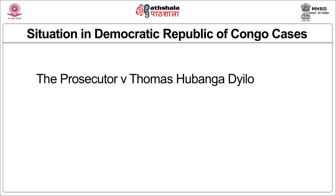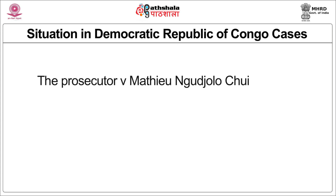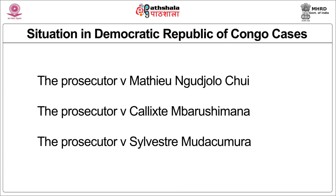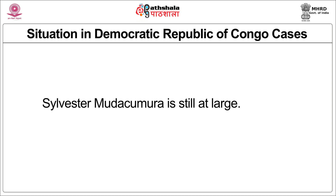In the situation in the Democratic Republic of Congo, the cases are the Prosecutor versus Thomas Lubanga Dyilo, the Prosecutor versus Bosco Ntaganda, the Prosecutor versus Germain Katanga, and the Prosecutor versus Mathieu Ngudjolo Chui. There are also cases of the Prosecutor versus Callixte Mbarushimana and the Prosecutor versus Sylvestre Mudacumura. Lubanga, Katanga, and Ntaganda are in the custody of the International Criminal Court; Sylvestre Mudacumura is still at large.